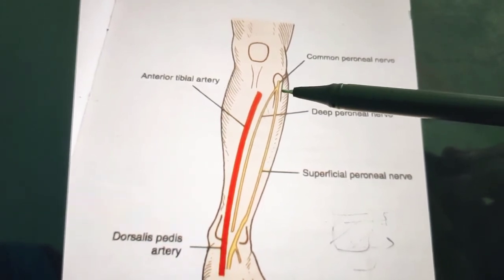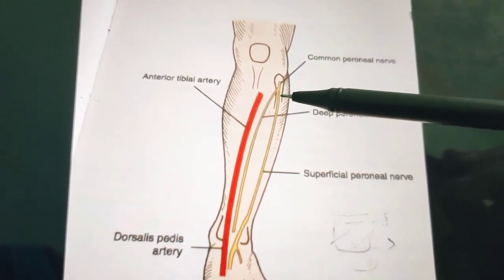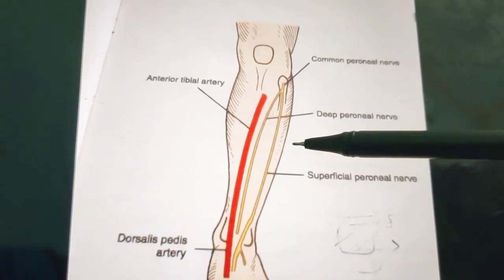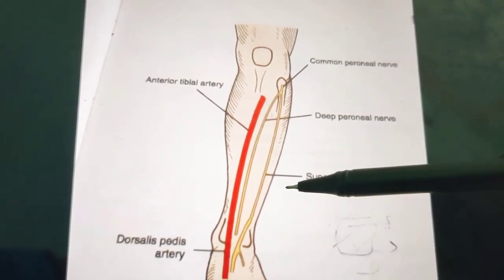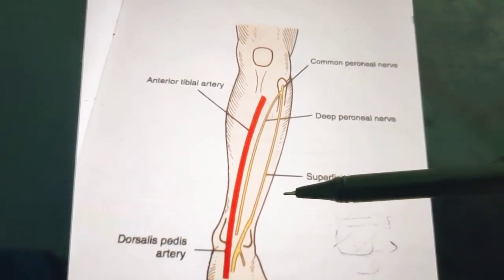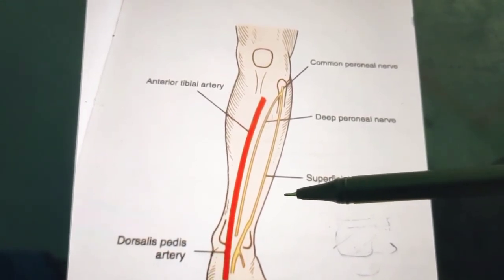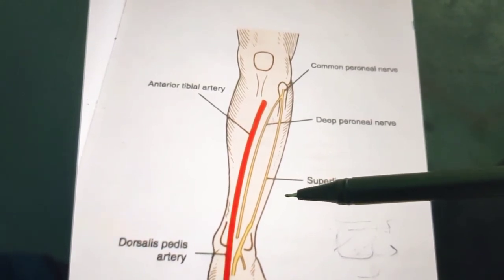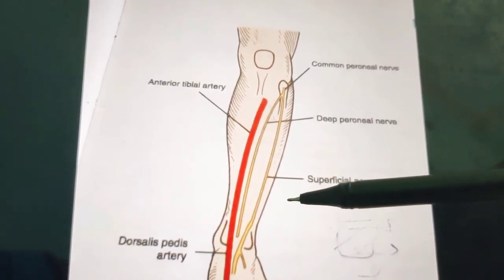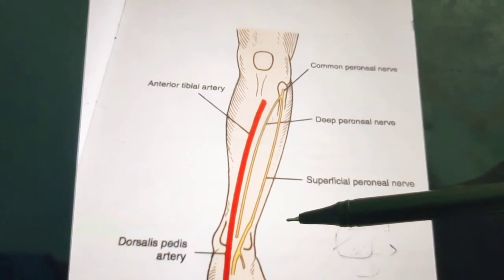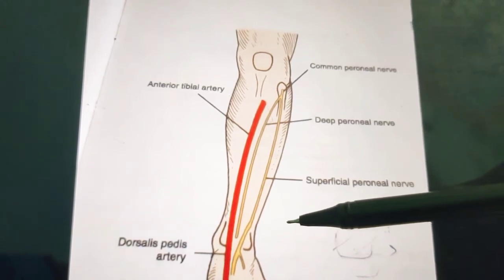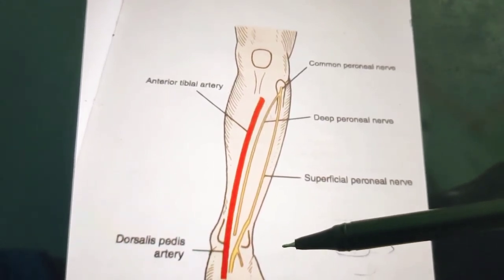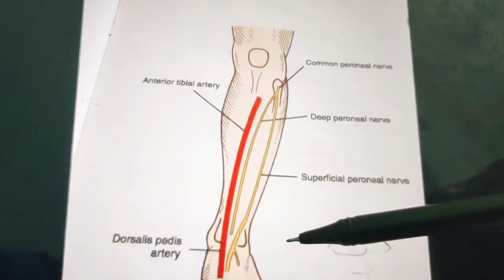In the upper one-third of the leg, the nerve descends in the substance of peroneus longus. In the middle one-third, it first descends for a short distance between peroneus longus and peroneus brevis, then reaches the anterior border of peroneus brevis and descends in a groove between peroneus brevis and extensor digitorum longus.